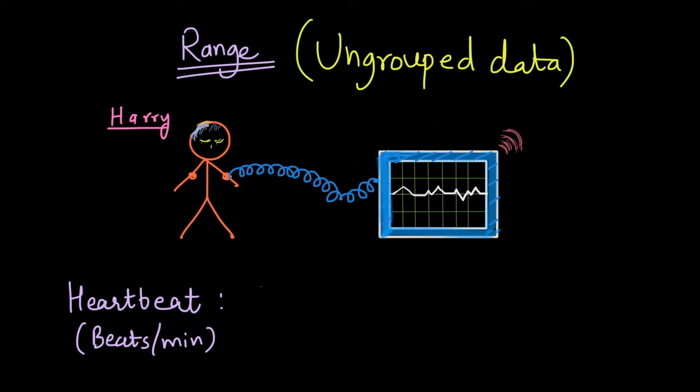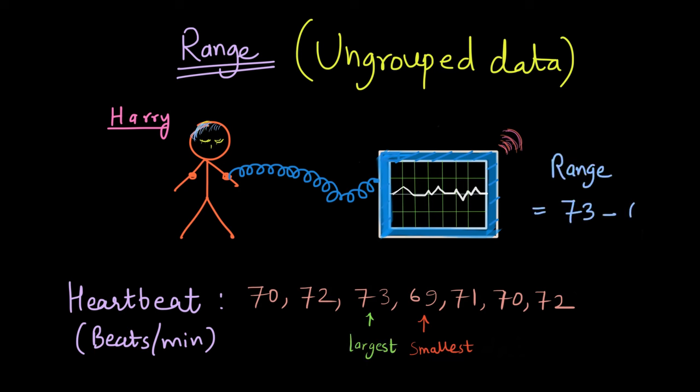What if the heartbeat data was: 70, 72, 73, 69, 71, 70, and 72? In this case, the smallest data point is 69 and the largest is 73. The range is 73 minus 69, which equals 4.